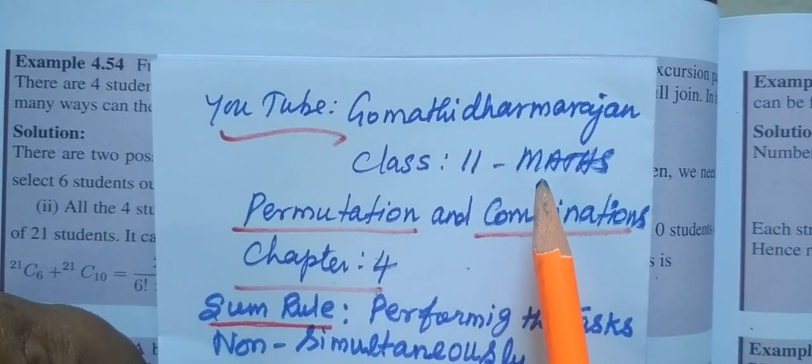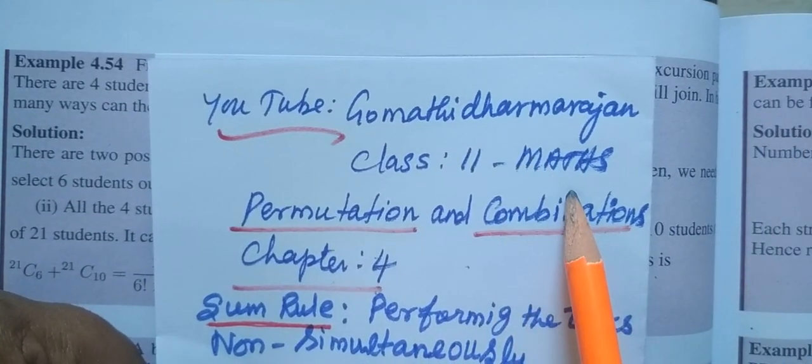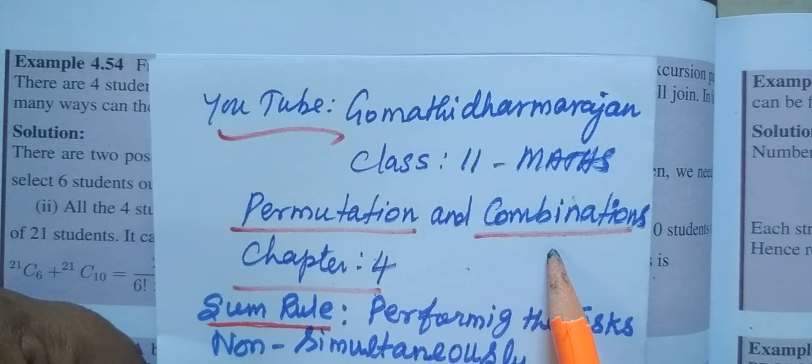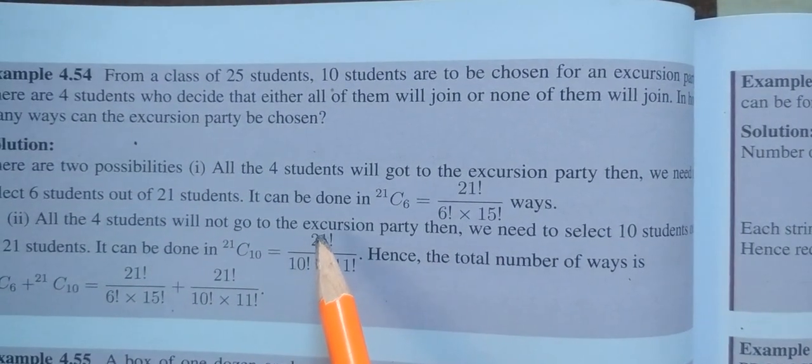Hello students. This is from Guamadi Dharmarajan. 11th Mass Permutation and Combination Chapter 4. You see example 4.54.